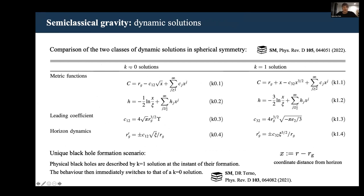Here you can see those two classes of solutions written out explicitly. The most convenient way to do it is to write them as series expansions in terms of the coordinate distance from the horizon. This is this parameter x here, which is defined as r minus rg. Then you can write out the two metric functions as series expansion in terms of x.